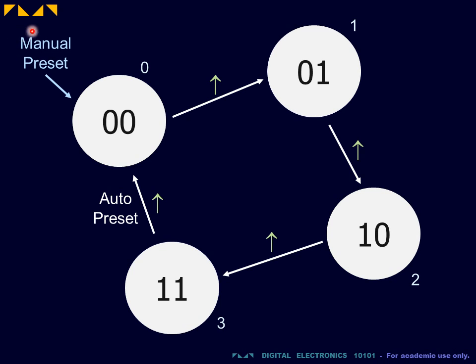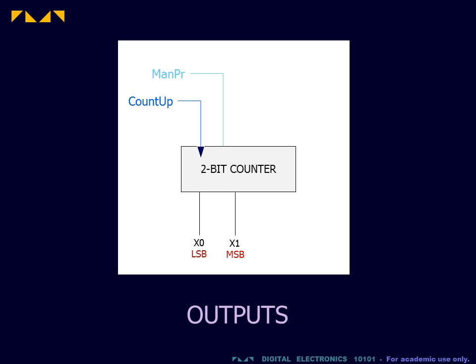The manual preset is an input by which the user can asynchronously reset the count to 0. The output x consists of 2 bits, x0 representing the least significant bit, and x1 representing the most significant bit.